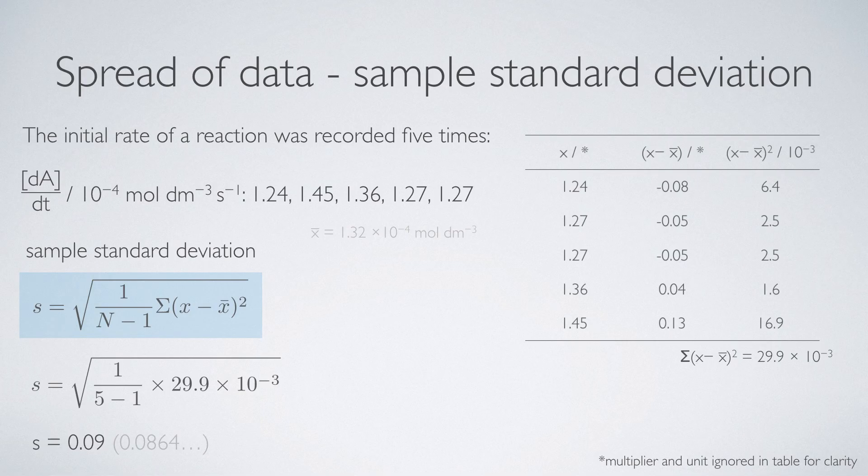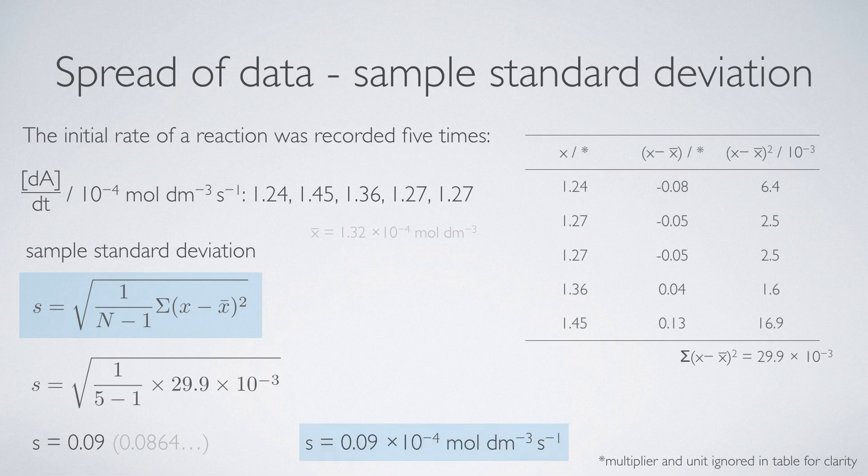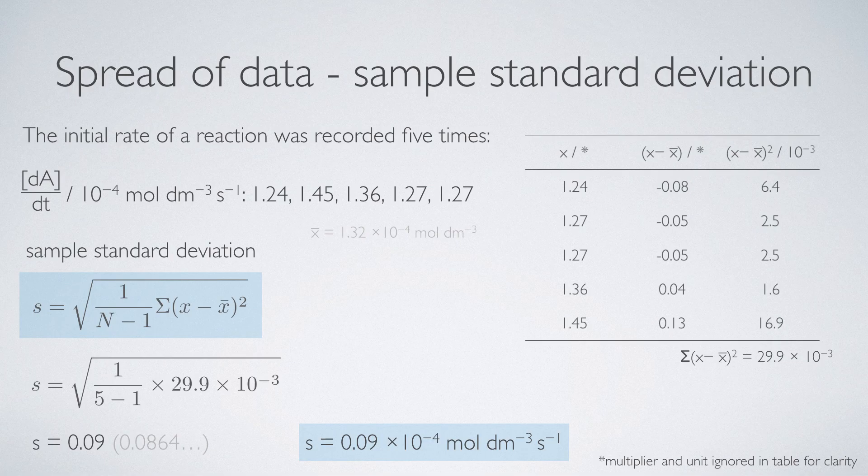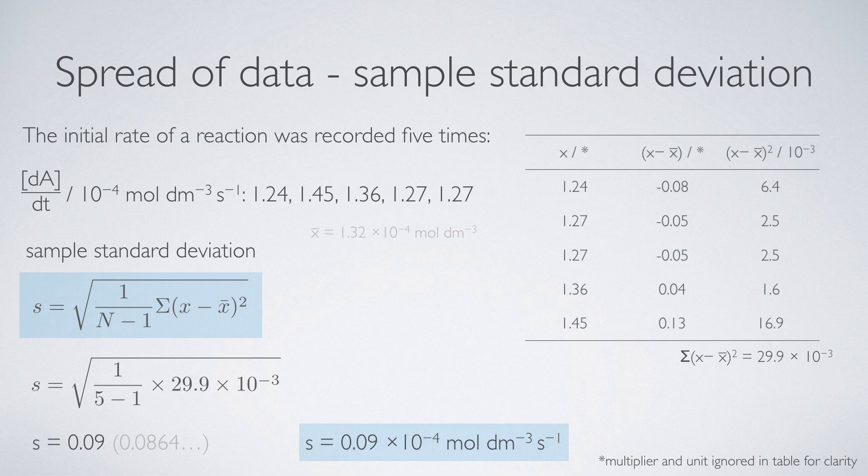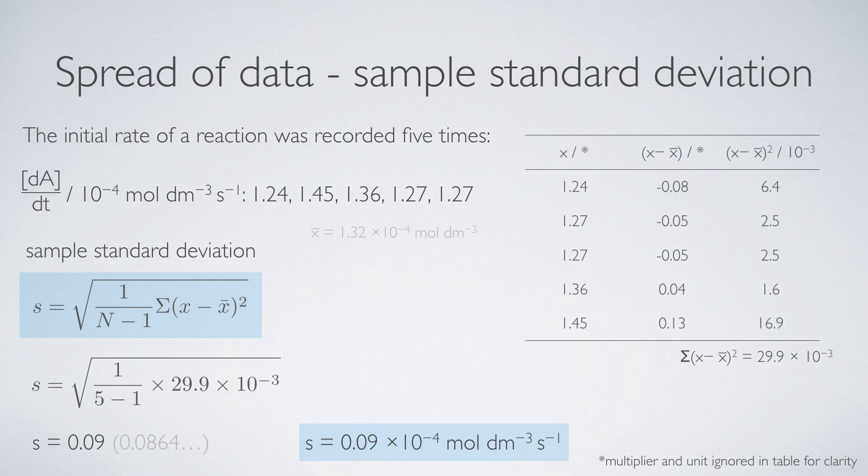Because standard deviation is plus or minus values on the mean, I've rounded this to have the appropriate number of significant figures based on the value of the collected data. In other words, two decimal places. Finally, finishing this up to make sure that the standard deviation has not only the same number of significant figures as appropriate, but any multiplying factors and units, this gives me, in this case, a standard deviation for my sample of 0.09 times 10 to the minus four moles per decimetre cubed per second.